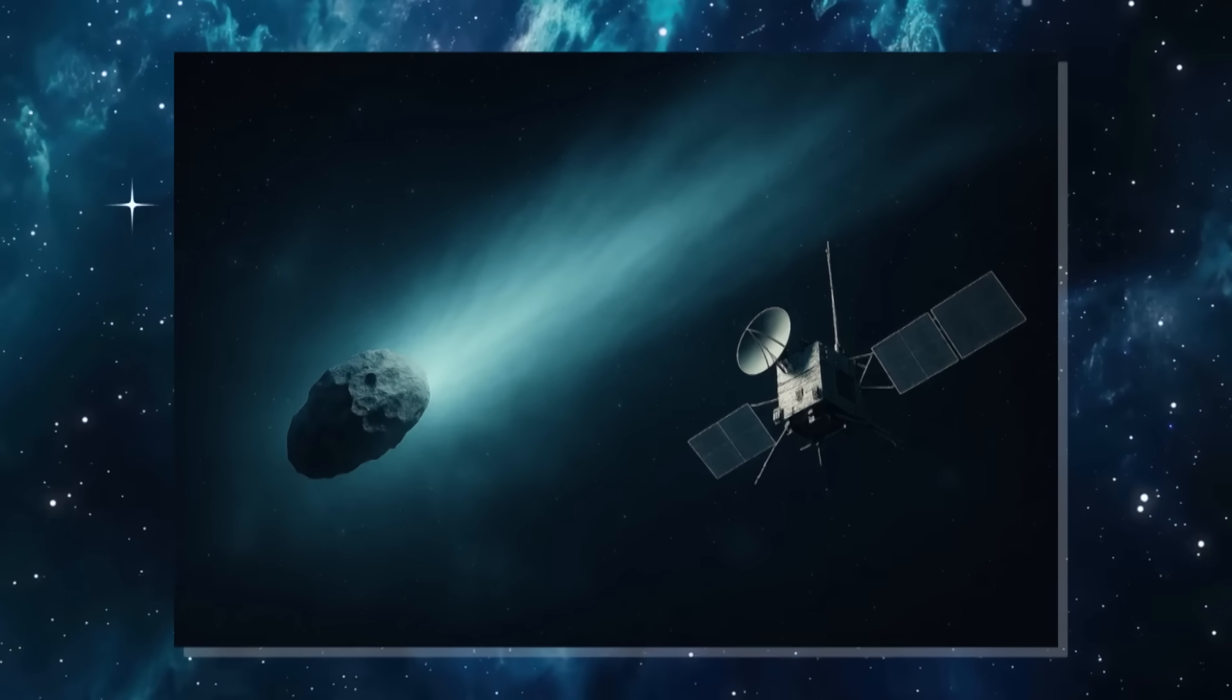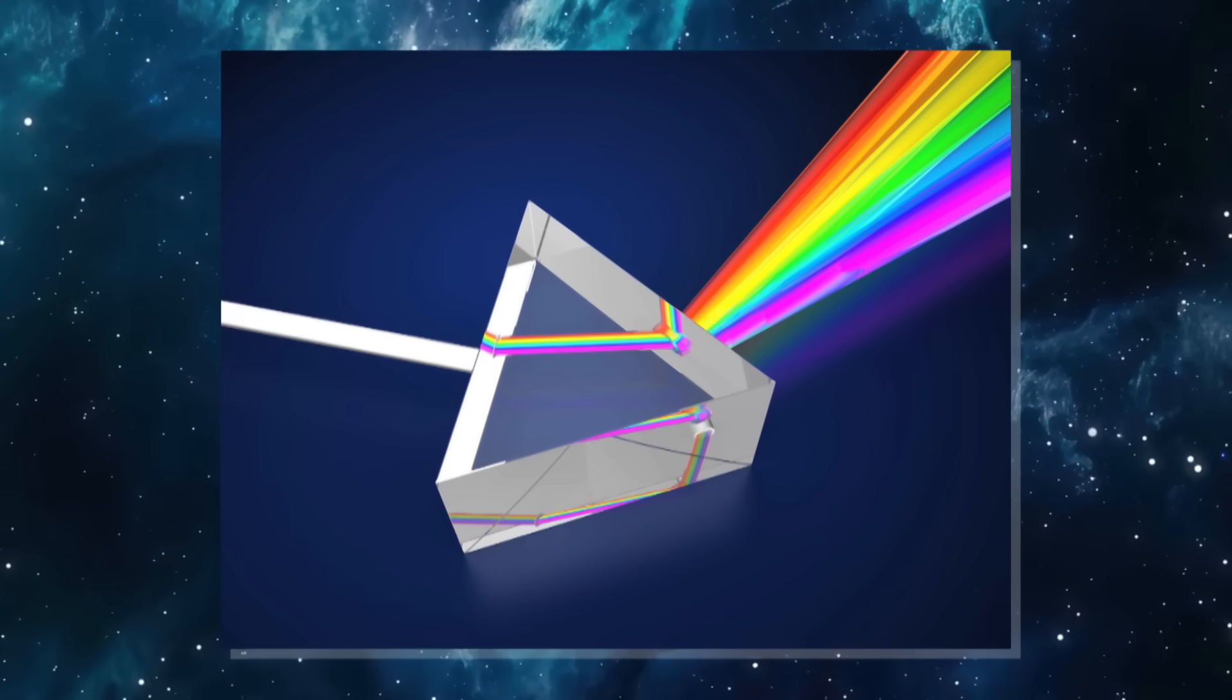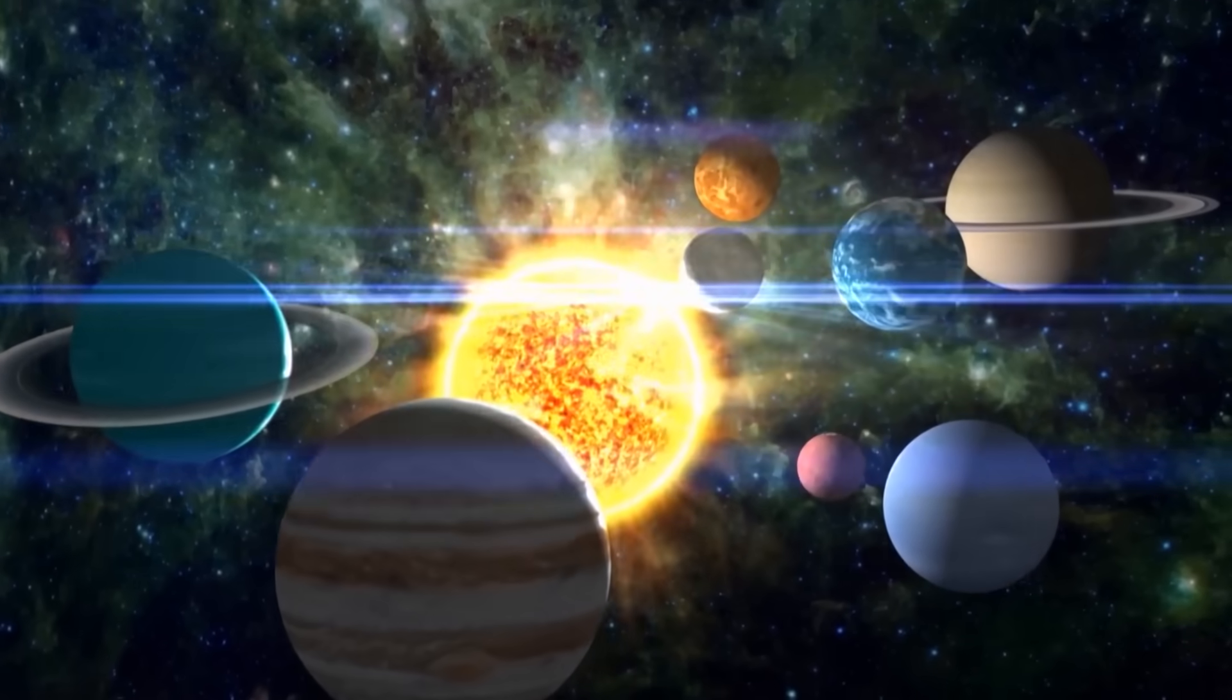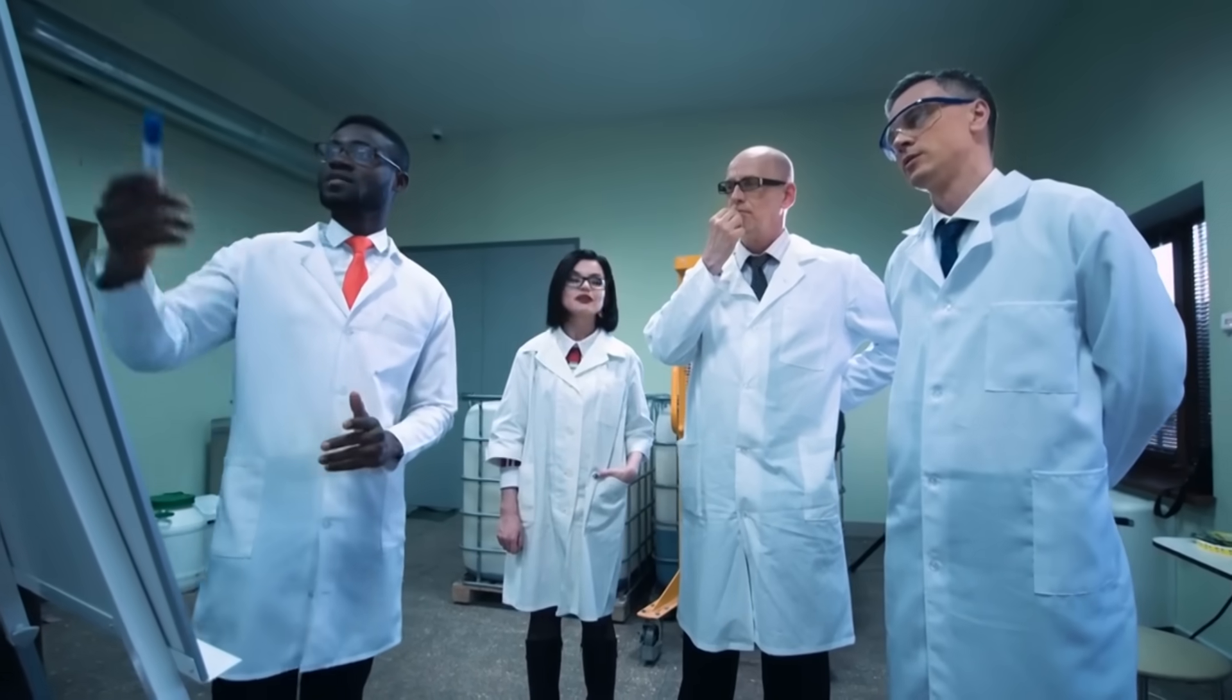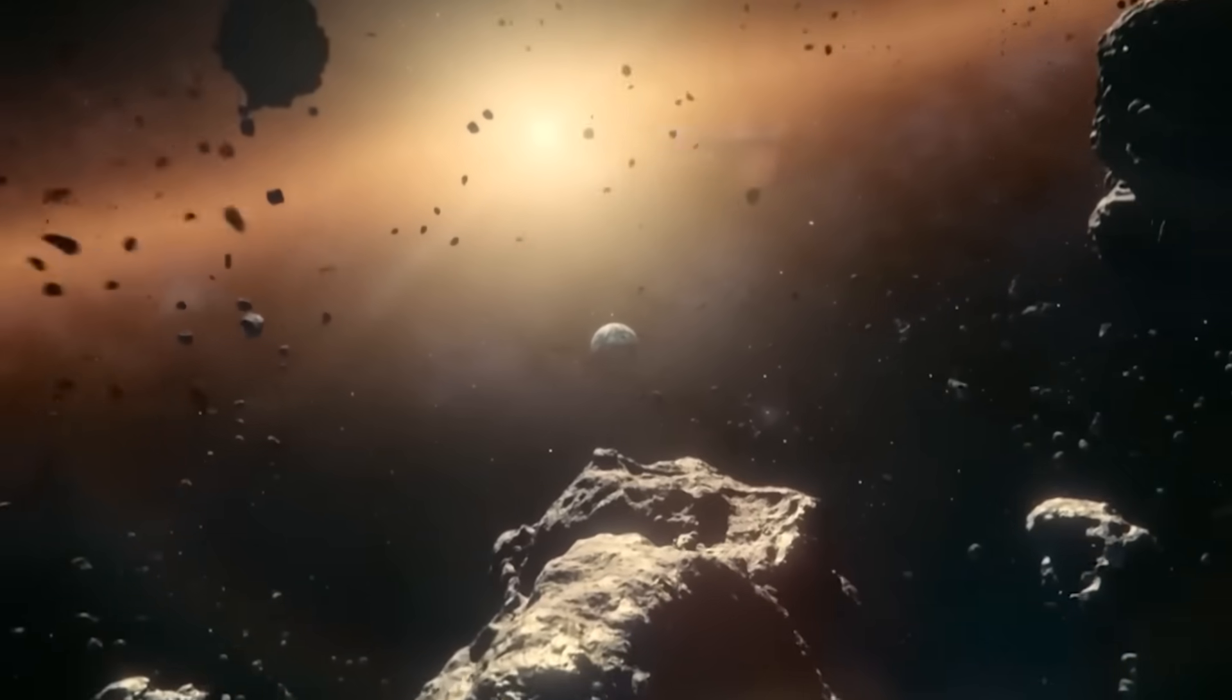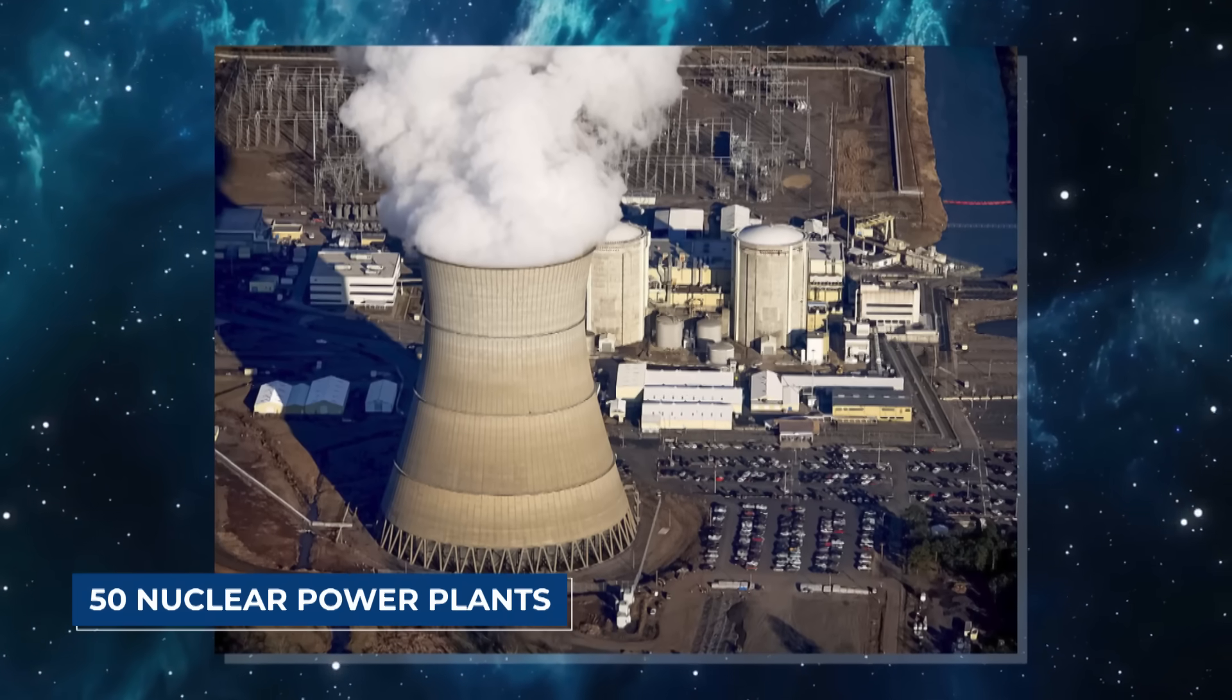Data from 3I Atlas has already shaken the scientific community. Spectroscopy suggests its composition is dominated by pure nickel, without the iron content normally found in natural meteoritic material. This unusual makeup alone would be enough to spark debate, but it is the energy readings that have truly alarmed researchers. Instruments have measured emissions consistent with a sustained 10-gigawatt power source buried deep within the object, comparable to 50 nuclear power plants operating in unison.